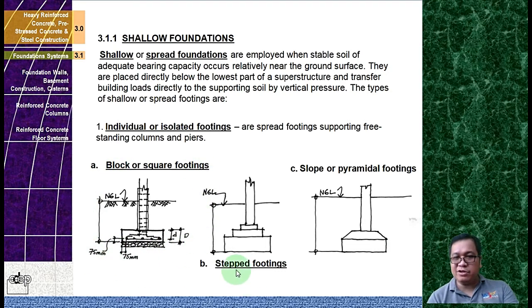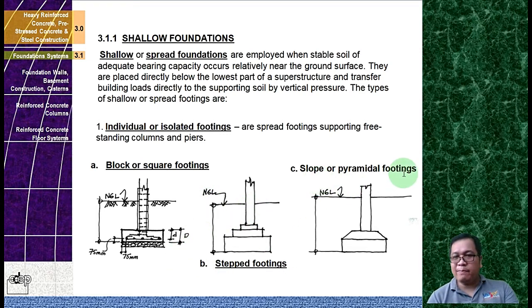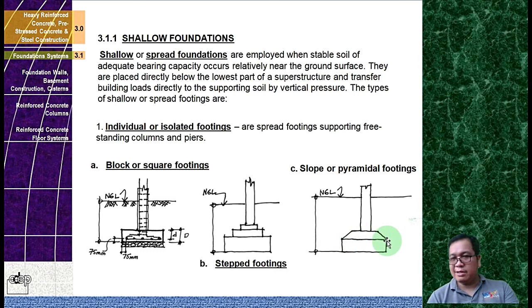You also have step footings — this is the NGL, the natural grade line. Then there are slope or pyramidal footings, which you can see are like the form of a pyramid, though more trapezoidal in shape.